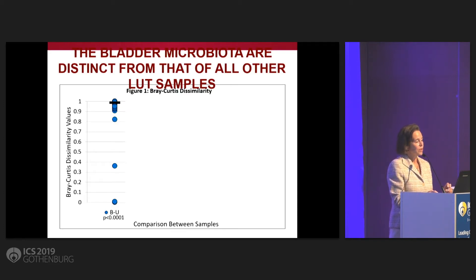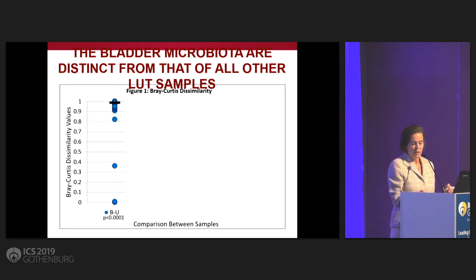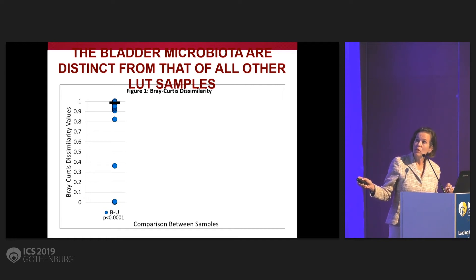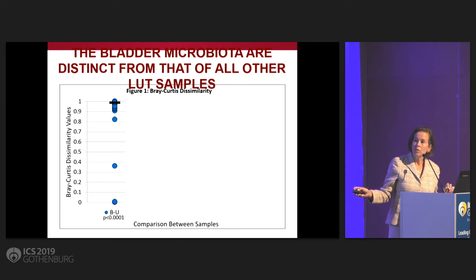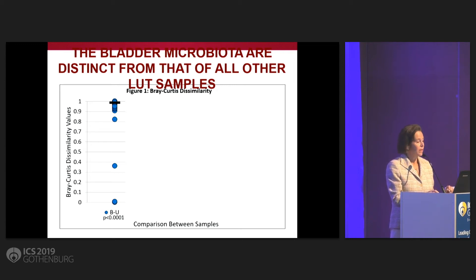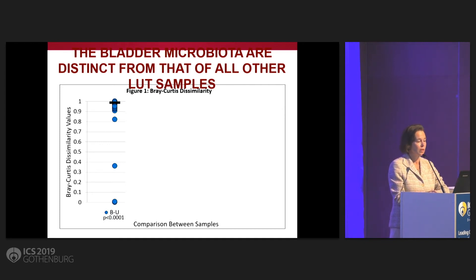Here I'm going to show results from a Bray-Curtis dissimilarity index. In the Bray-Curtis dissimilarity index, one means very dissimilar and zero means very similar. Here we're comparing bladder with the urethral specimens, and overall the bladder and the urethra results were very dissimilar, suggesting that these are two separate microbial niches.